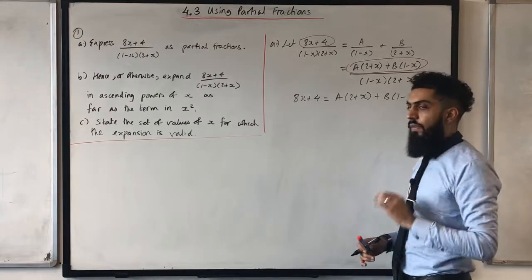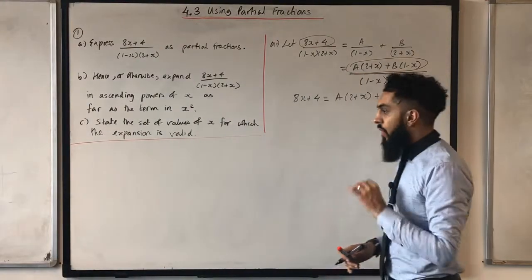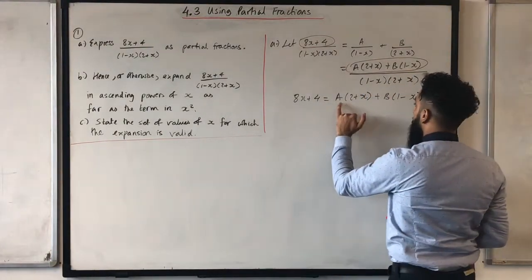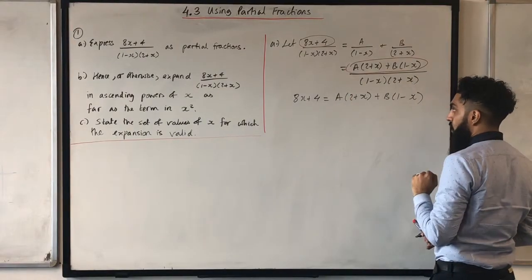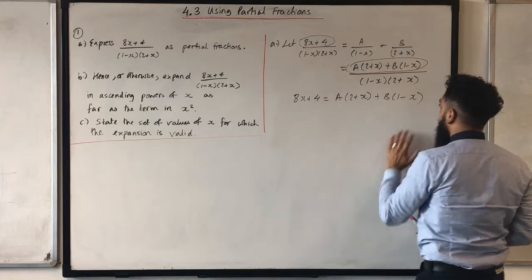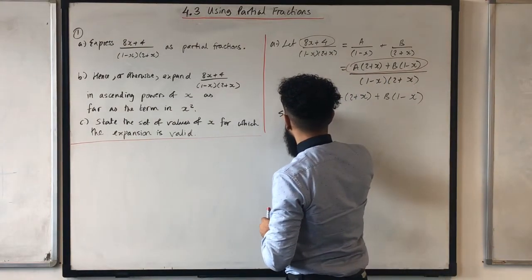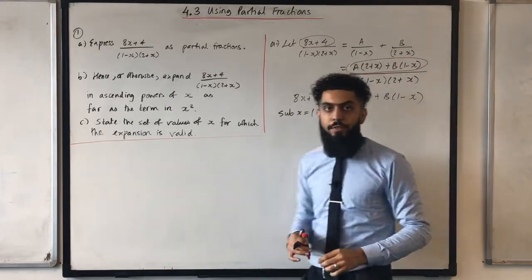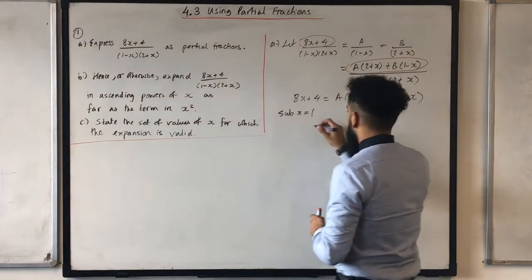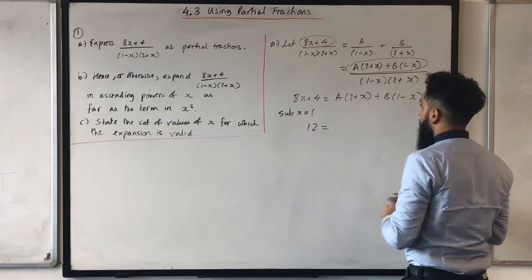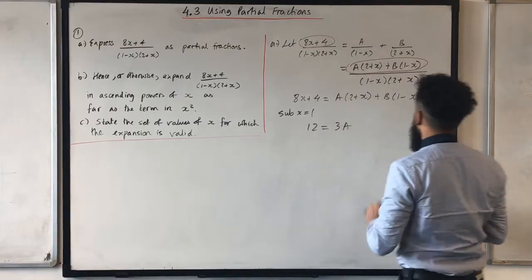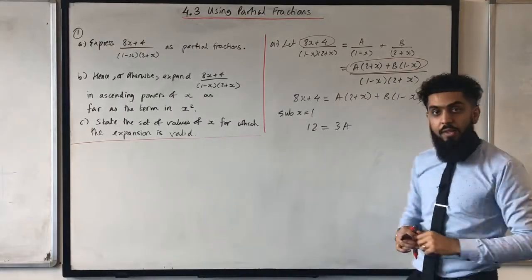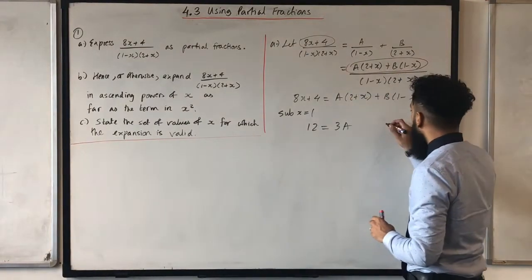I need to work out the values of A and B using substitution. To work out A, I need to eliminate B. I can do that by substituting x equals 1. Substituting x equals 1: 8 times 1 is 8, plus 4 is 12. So 12 equals (2 plus 1) times A, which is 3A. And (1 minus 1) times B is 0. Solving gives A equals 4.